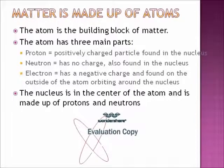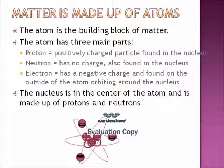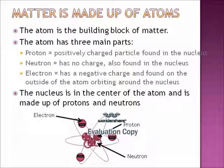The nucleus is in the center of the atom and is made up of protons and neutrons. Looking at the model of the atom, the positive charged particle is the proton, the particle with no charge is the neutron, and the negative charged particle is the electron. The nucleus is in the center and is made up of protons and neutrons.